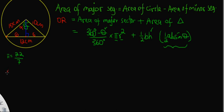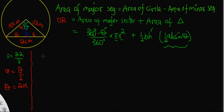Let me call this half-angle alpha, so alpha equals half of θ. The angle required to solve this question is θ, and θ equals 2α. So whenever I solve for the value of alpha, all I need to do is multiply by 2 to get the value of θ.